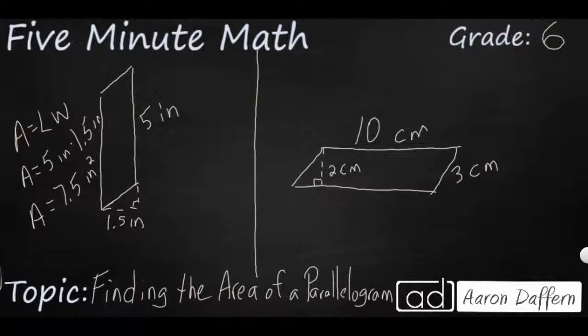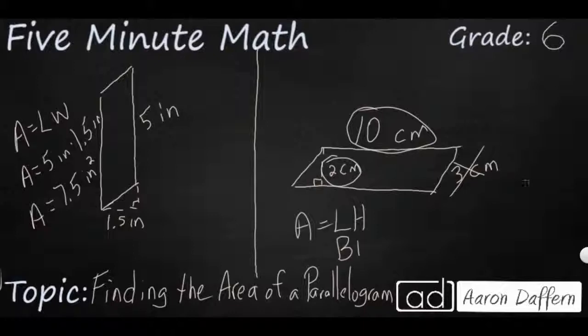Now we have over here three different units. Remember, we do not need the length of a slanted side. We simply need the length of the top, the straight side, and also the width or height. You could say length times height or base times height. And in this case, we're looking at 10 times 2. That's going to be 20 centimeters squared.